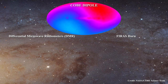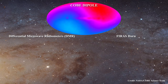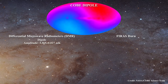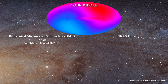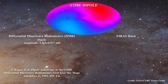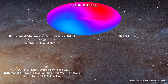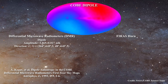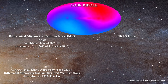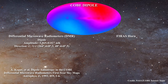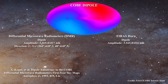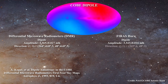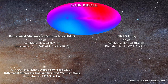The DMR measured a dipole magnitude of 3.365 ± 0.027 mK as reported in this paper. The DMR also set the direction of the dipole as follows, which is generally in the direction of the constellation Leo. The COBE FIRAS horn obtained a value of 3.343 ± 0.016 mK in a direction consistent with that obtained by the DMR.